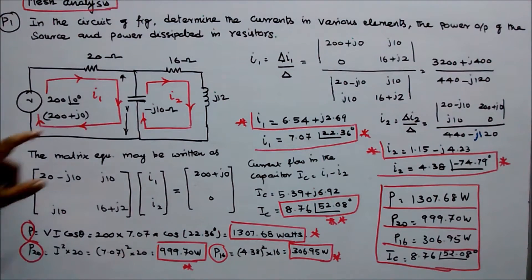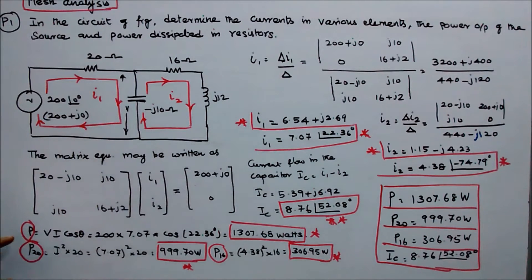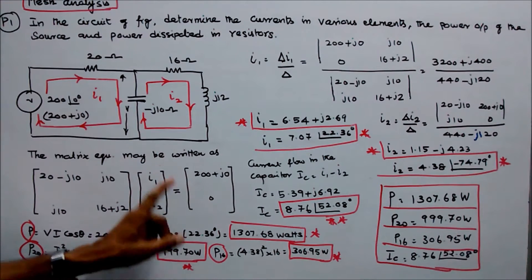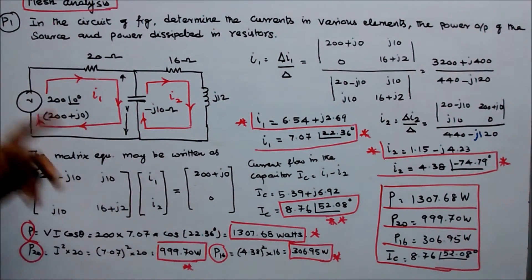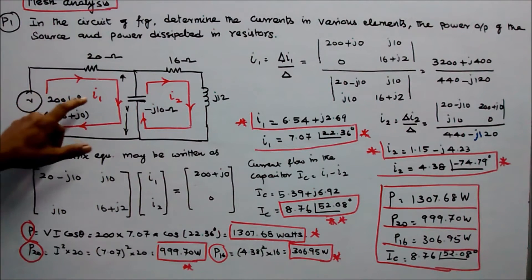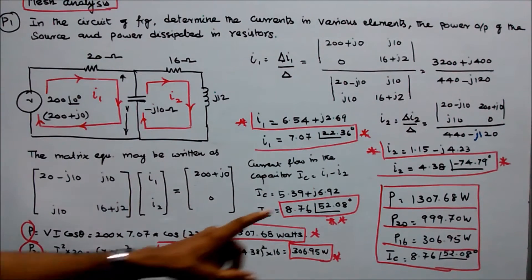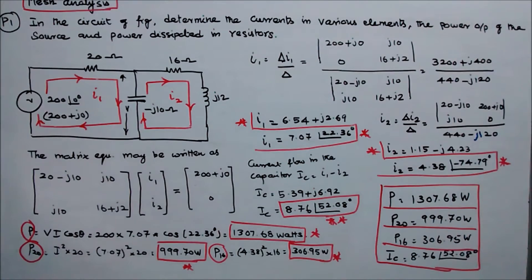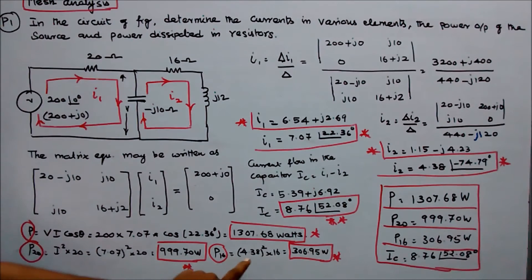To find the power output of the source: voltage = 200, current i = 7.07, power factor angle = 22.36 degrees. Power P = V × I × cos(theta) = 200 × 7.07 × cos(22.36°) = 1307.68 watts. Power dissipated in the 20 ohm resistor is i1² × 20 = 7.07² × 20 = 999.70 watts. Power dissipated in the 16 ohm resistor is i2² × 16 = 4.38² × 16 = 306.95 watts.